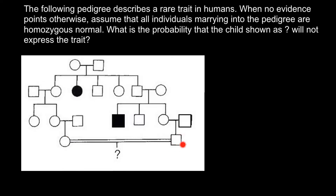As we see, both parents are phenotypically normal. That means we have to find the probability for them to be heterozygous. Only if both parents are heterozygous would they have a probability of having an affected child. If one parent were homozygous normal, the child would not express this genetic disorder, because this is a recessive genetic disorder. The child has to get a defective allele from both parents.